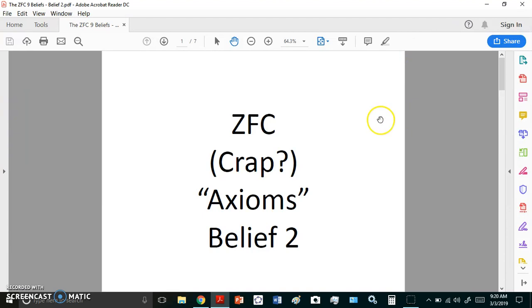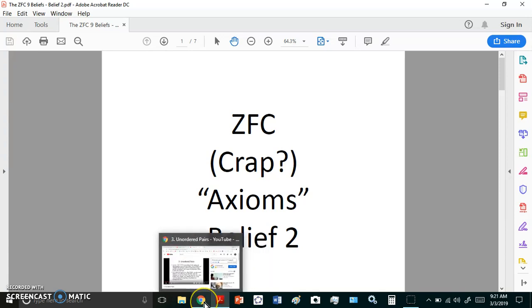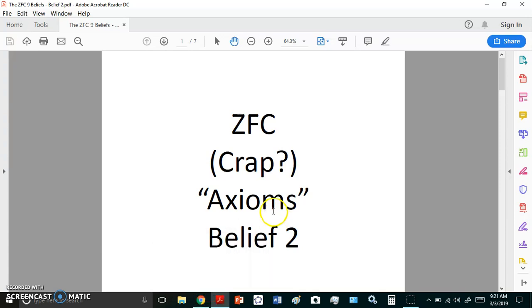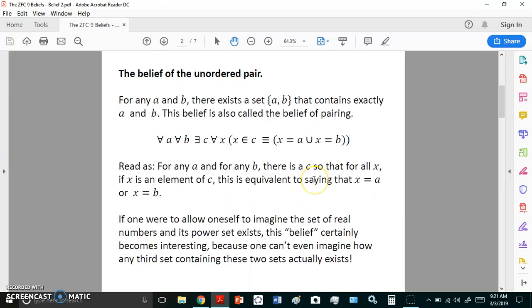If you remember, the first so-called axiom was the axiom of extensionality, which says that if two objects are equal to another object, then they must be the same object. In this second belief, it's not really an axiom, it's a belief, and it's garbage.